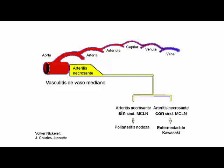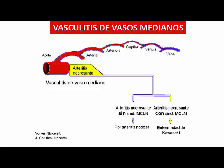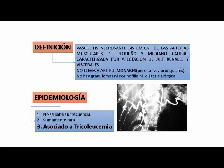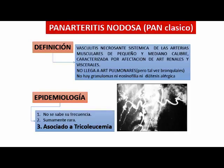Por último, tenemos las arteritis necrotizantes de vaso mediano, que son raras. Pueden ser la poliarteritis nodosa y la enfermedad de Kawasaki. La poliarteritis nodosa o el PAN es una vasculitis necrosante también sistémica de arterias musculares de más de mediano calibre, donde la afectación mayor es en arterias renales y viscerales.